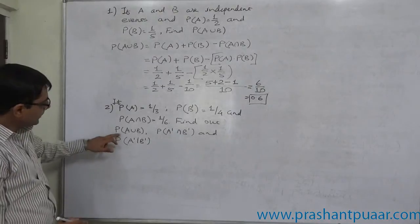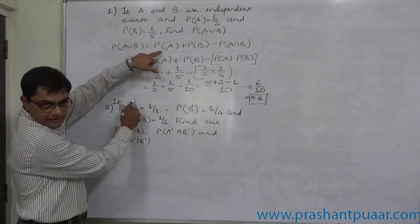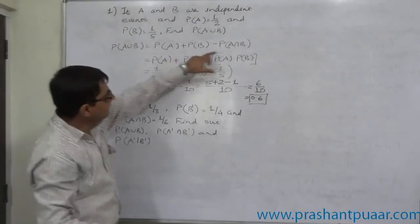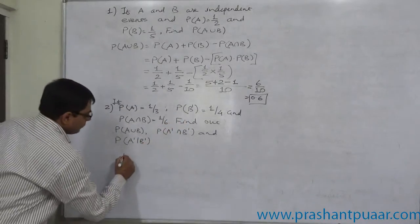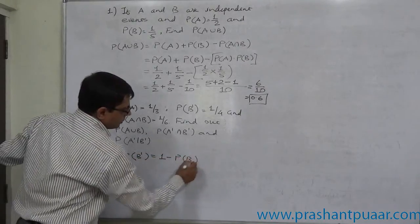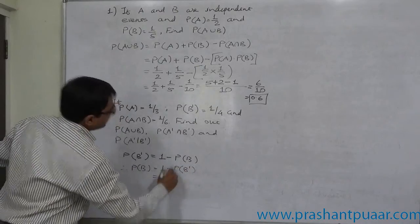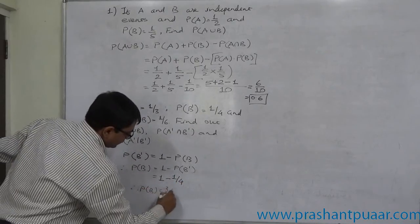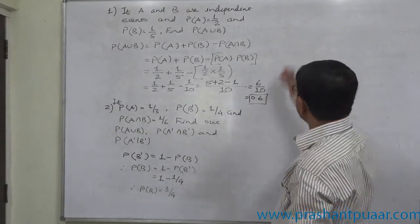To find P(A∪B) we need P(B), but we have P(B') so first we must find P(B). We know P(B) = 1 minus P(B') = 1 minus 1/4, so P(B) = 3/4. Now we can find P(A∪B).